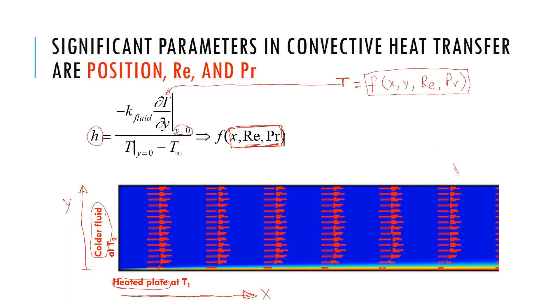So, for example, we see that whatever h formula looks like, it better have these quantities, Reynolds number and Prandtl number.